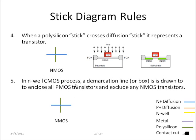Now in this n-well CMOS process, the demarcation line or box is drawn to enclose all pMOS transistors. So your pMOS is enclosed or sits inside the n-well, and any nMOS is excluded from this n-well.